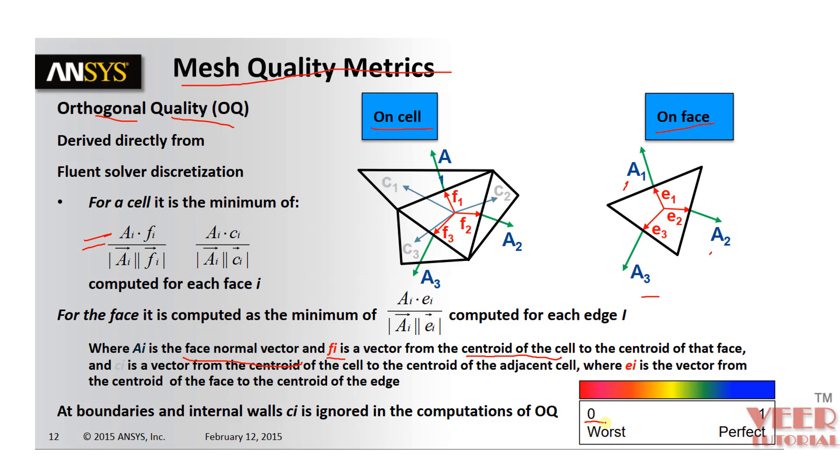So it is going to create a vector product of them by this formulation and the value is calculated. If the value is zero, it is the worst quality of element and if it is one, then it is the perfect quality.